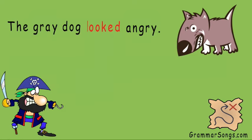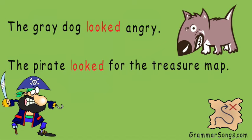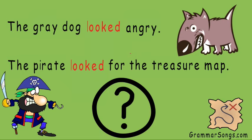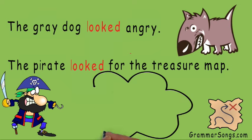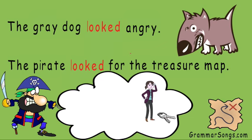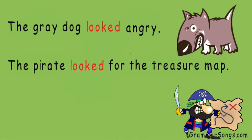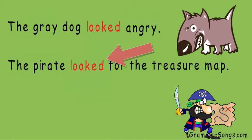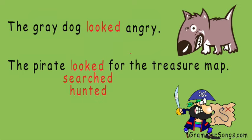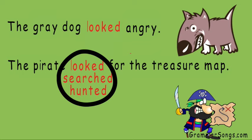The gray dog looked angry. The pirate looked for the treasure map. Although the same verb looked is being used in both of these sentences, only one sentence shows action. Well, I know when I look for something, I move around until I find it. I'll bet the pirate moved around while he looked for the treasure map. Moving is action, so looked in the second sentence must be an action verb. Also, this sentence would make sense if I substituted looked for other action verbs — the pirate searched for the treasure map, or the pirate hunted for the treasure map. The fact that I can substitute look with other action verbs that make sense is another clue that looked in this sentence is showing action.